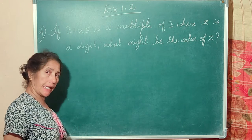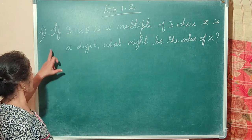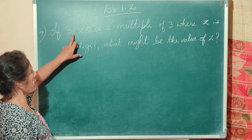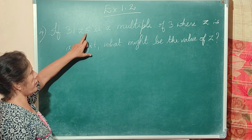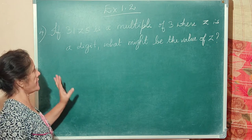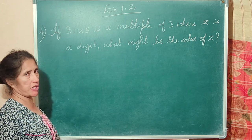The last question of this exercise: if 31z5 is a multiple of 3, where z is a digit, what are the possible values of z?